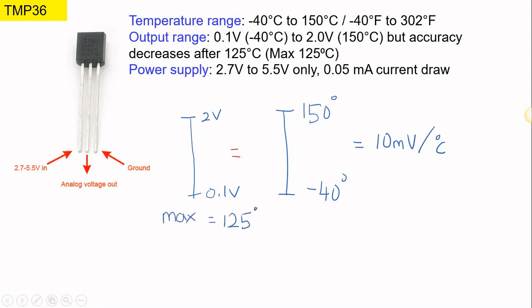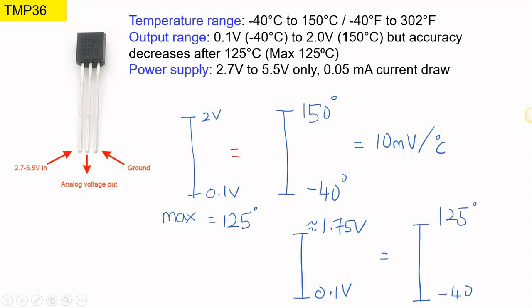According to the datasheet, the maximum temperature that can be measured by this sensor is only 125°C, meaning it will only produce a voltage output of 0.1V to 1.75V, equivalent to minus 40°C to 125°C. This is an approximation calculated through the voltage step resolution — 25 degrees times 10 millivolts equals 0.25V difference, so the highest voltage is 1.75V. We are going to use this information in our coding.